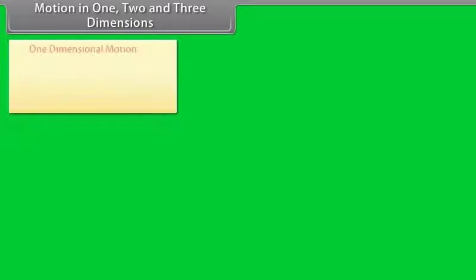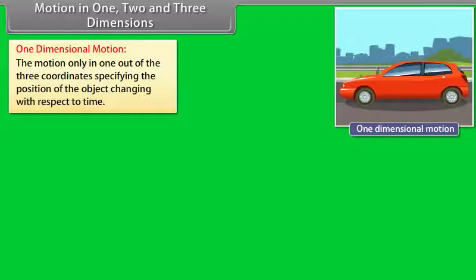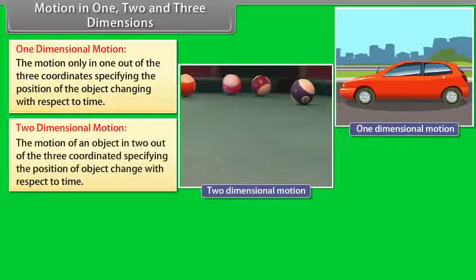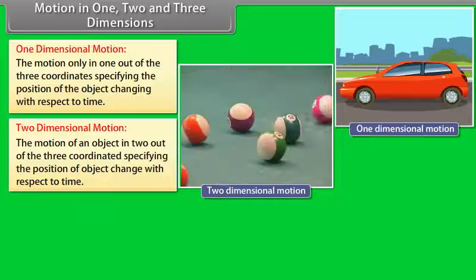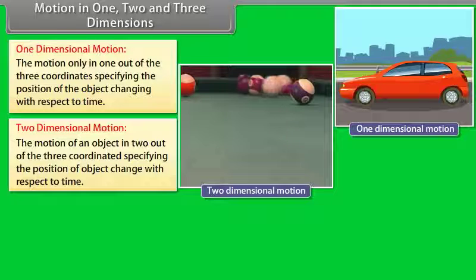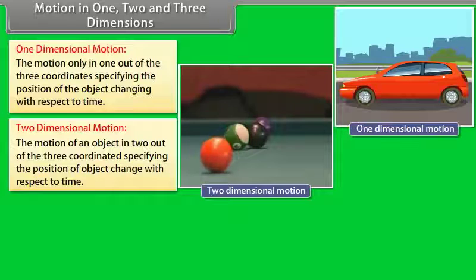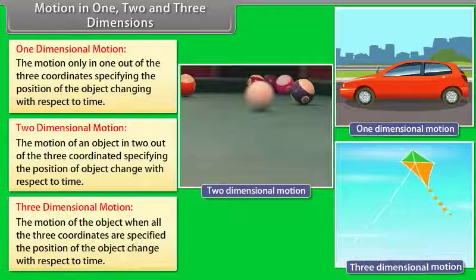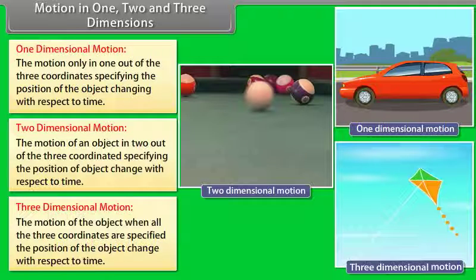Motion in one, two, and three dimensions. One-dimensional motion: the motion in which only one out of three coordinates specifying the position of the object changes with time. Example: a car traveling in a straight line. Two-dimensional motion: the motion in which two out of three coordinates specifying the position of the object change with time. Example: a billiard ball moving over a billiard table. Three-dimensional motion: the motion in which all three coordinates specifying the position of the object change with time. Example: a kite flying on a windy day.